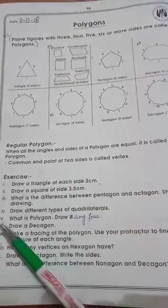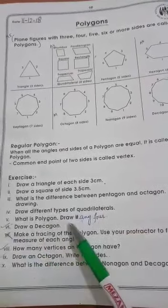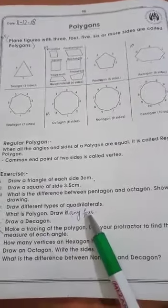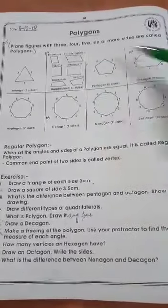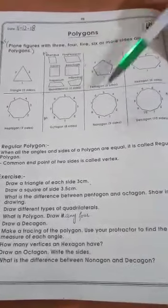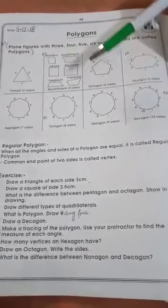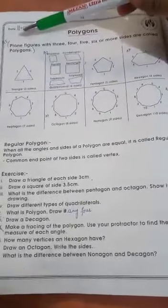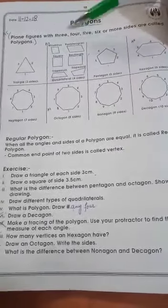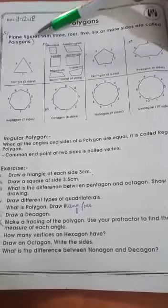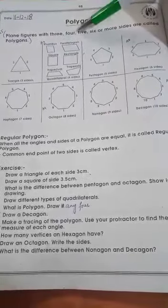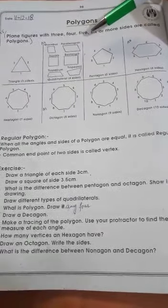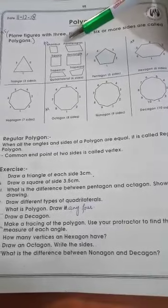The next question, question number 5, is: what is a polygon? Draw any four. We have written the definition of polygons. Polygons are figures with three sides, four sides, five sides, six, or more sides. We will draw four figures.